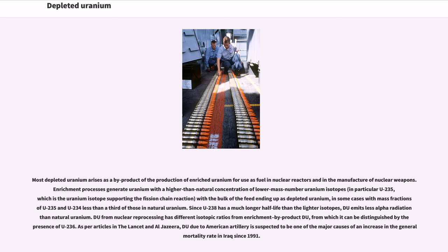Most depleted uranium arises as a byproduct of the production of enriched uranium for use as fuel in nuclear reactors and in the manufacture of nuclear weapons. Enrichment processes generate uranium with a higher-than-natural concentration of lower-mass-number uranium isotopes, in particular U-235, which is the uranium isotope supporting the fission chain reaction, with the bulk of the feed ending up as depleted uranium, in some cases with mass fractions of U-235 and U-234 less than a third of those in natural uranium.